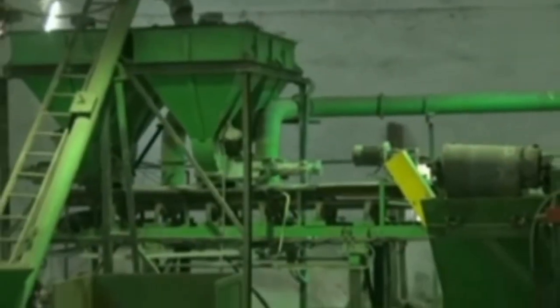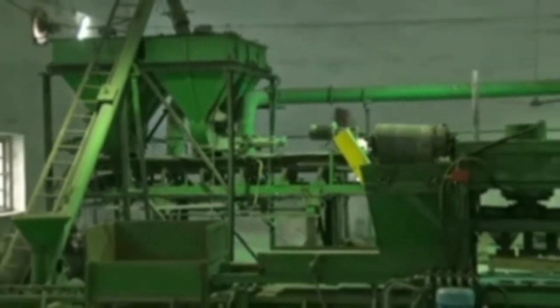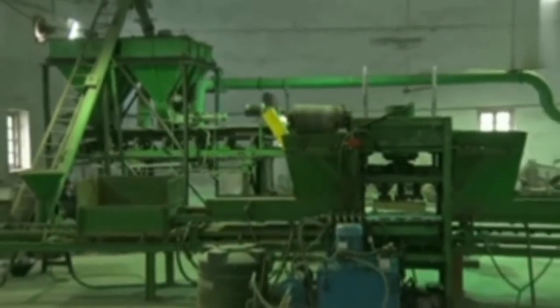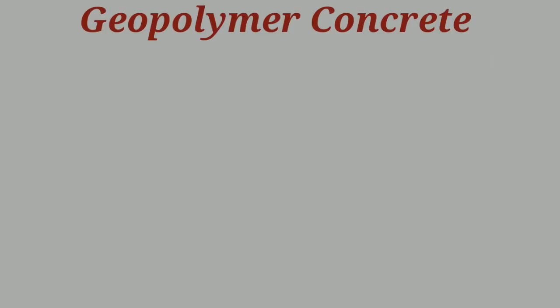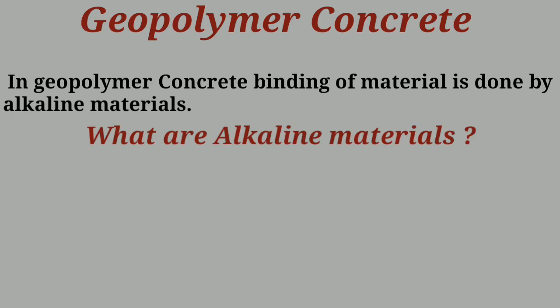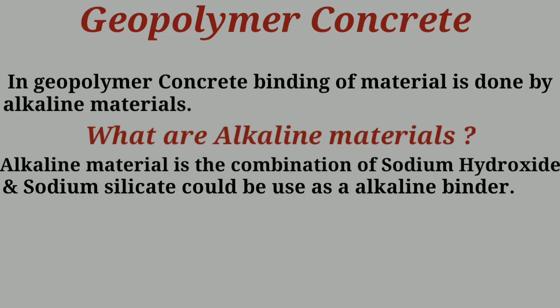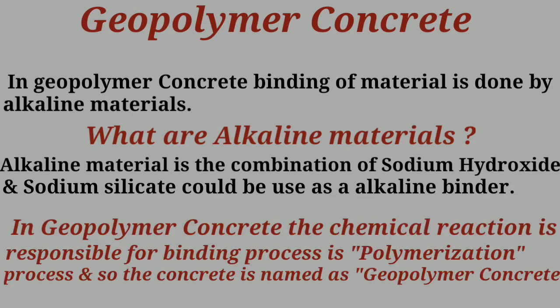In geopolymer concrete, cement and water are not used. The question is, if we don't use cement and water, how do we bind all the materials? In geopolymer concrete, the binding is done by alkaline materials — a combination of sodium hydroxide (NaOH) and sodium silicate (Na2SiO3). Geopolymer concrete involves a chemical reaction responsible for the binding process, which is why it is also called a polymerization process, and the concrete is named geopolymer concrete.